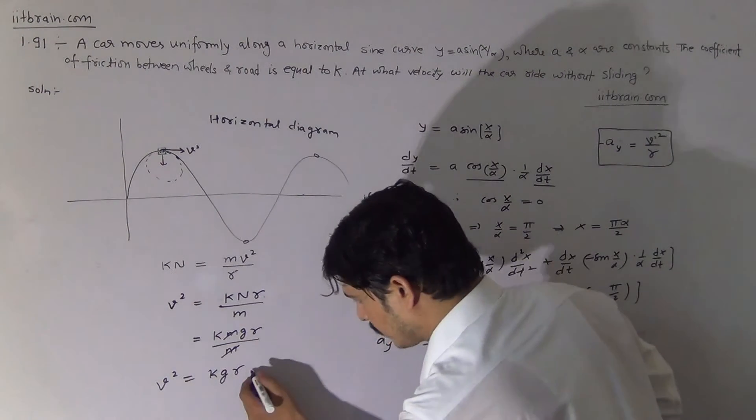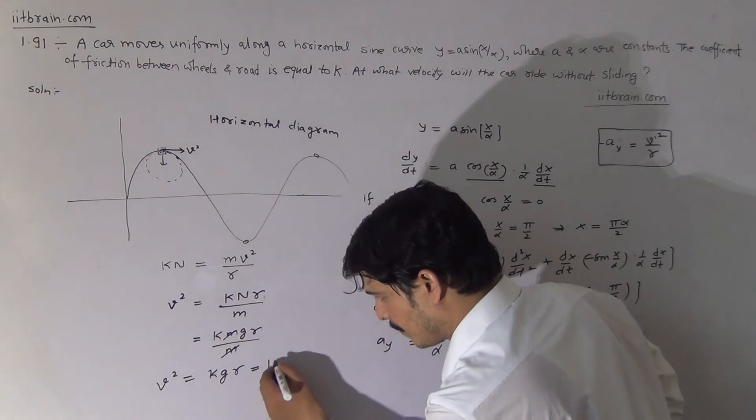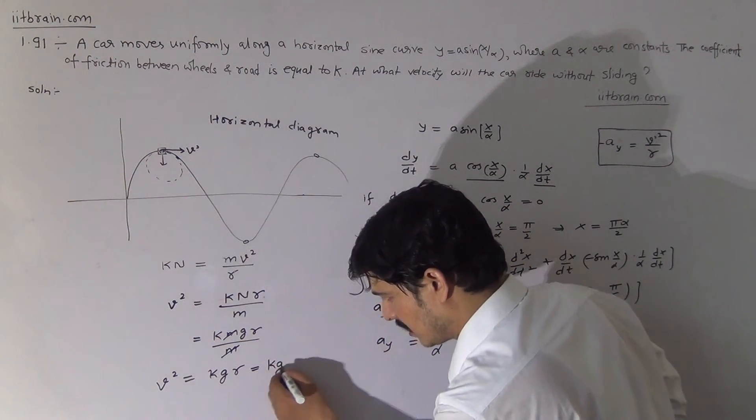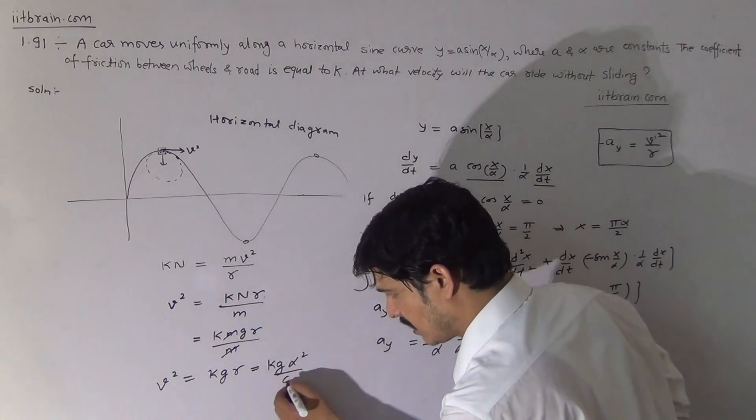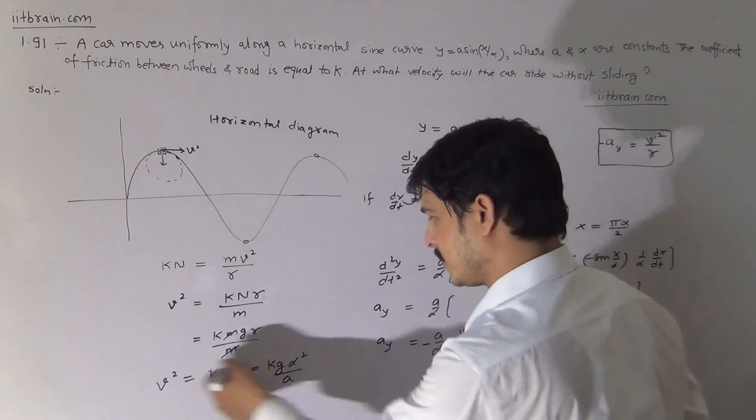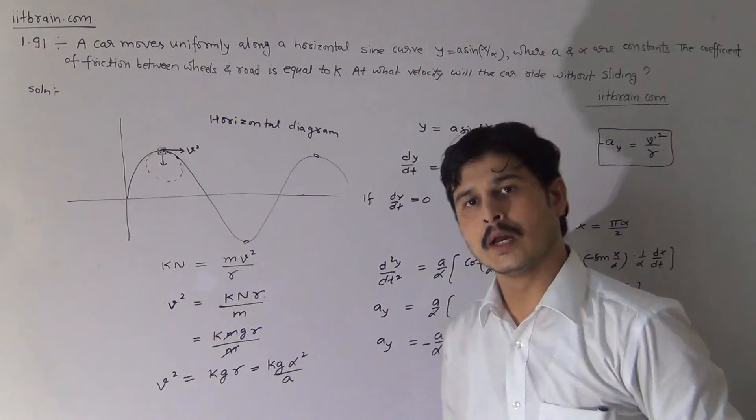Now that we have the radius of curvature R = α²/a, we substitute into our velocity formula V² = KgR to get V² = Kg·(α²/a). This gives us the maximum velocity at which the car can travel without sliding.